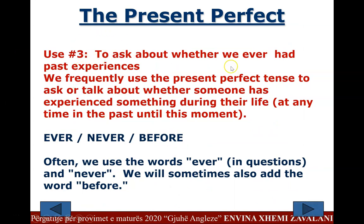Use 3: to ask about whether we ever had past experiences. We frequently use the present perfect tense to ask or talk about whether someone has experienced something during their life, at any time in the past until this moment. We often use the words 'ever', 'never', and 'before' in questions. Examples: 'Have you ever eaten fried insects?' 'No, I haven't tried fried insects and never will.' 'Has Jimmy ever been this sick before?' 'Have you taken private English lessons?' 'I have never travelled by train before.' 'Never in my life have I been so much in love.'